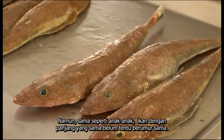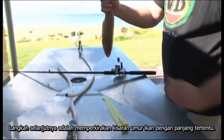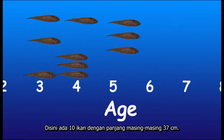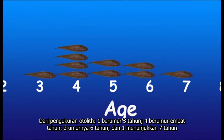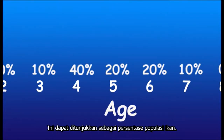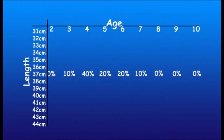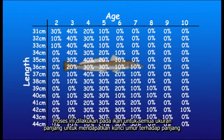The next step in the process is to establish the age range of fish at specific lengths. Let's take 37cm tiger flathead to start with. Here are 10 fish at 37cm. We know from their otoliths that one fish is only three years old, four are four years old, two are five years old, two are six years old, and one is seven years old. In terms of percentages for the whole tiger flathead stock at 37cm: 10% are three years old, 40% four years old, 20% five years old, 20% six years old, and 10% are seven years old. This process is repeated for fish of all lengths to develop what scientists call an age-length key. For tiger flathead, the age-length key looks something like this.